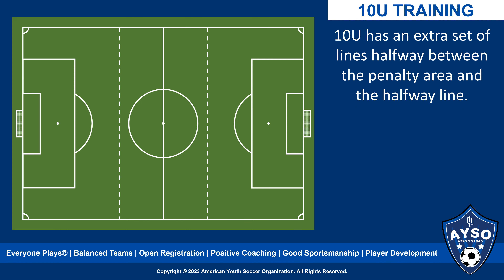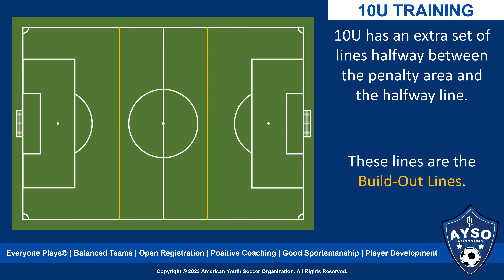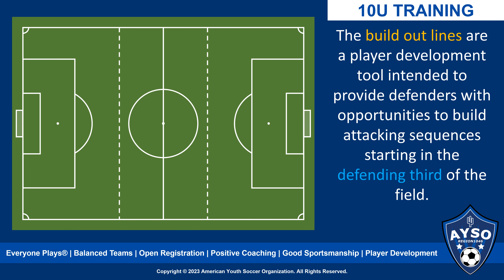Tenue fields have an extra set of lines located midway between each penalty area and the halfway line. These are the build-out lines. They are a player development tool intended to provide defenders with opportunities to build attacking sequences starting in the defending third of the field.